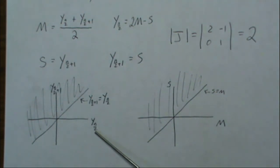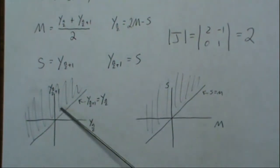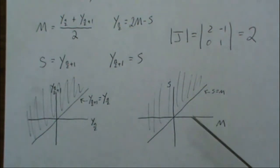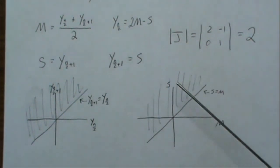And I guess technically that should be a dotted line because it can't be equal. Because we're in a continuous distribution setting, the probability that they're equal is 0. So then this line is mapped to this line in M and S space.